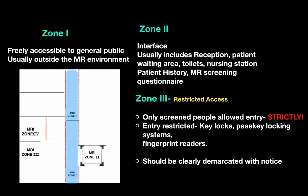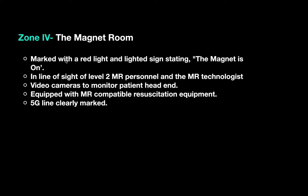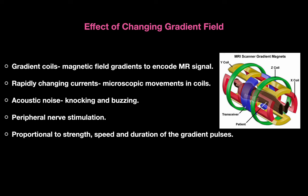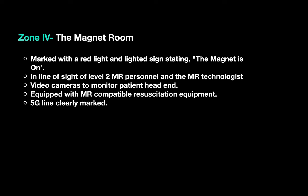Zone 4 is the magnet room, marked with a red light and a lighted sign stating the magnet is on, in line of sight of MR Level 2 personnel. MR Level 2 and Level 1 MR personnel classifications are given by the CBIR. The room is equipped with video cameras to monitor the patient, MR-compatible resuscitation equipment, and is clearly demarcated with the 5-Gauss line.